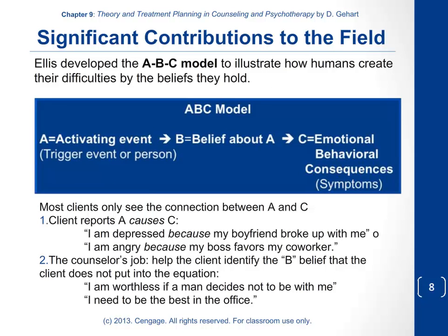Ellis summarizes this basic cognitive premise in his ABC model. A is the activating event — the trigger. C is the emotional or behavioral consequence. It feels natural to think that A causes C, but the insight cognitive behavioralists offer is that it's really B — the belief about A — that is the true source of emotional and behavioral consequences and distress.